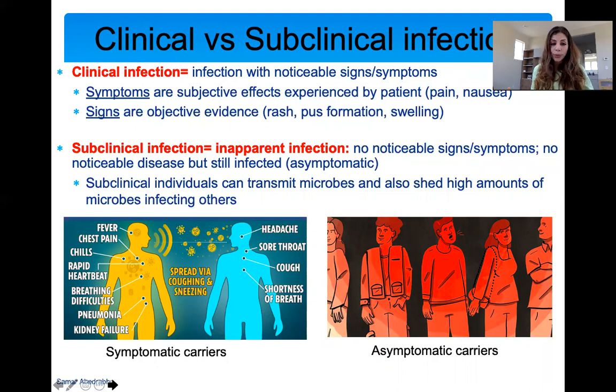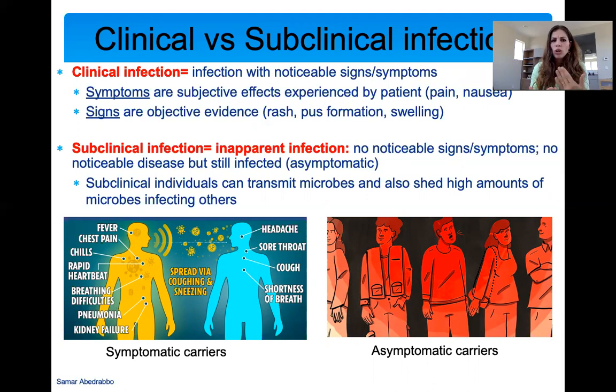I want to differentiate symptoms from signs. Signs are something you can see — they're objective. If you're a doctor and a patient comes to you, you can see signs: yellow in their eyes, a rash, swelling. Symptoms are subjective — symptoms are what you ask the patient. They tell you: I have a headache, I have pain, I have nausea. You cannot see a headache. Clinical infections show signs and symptoms; subclinical infections have no signs or symptoms but you're still infected.